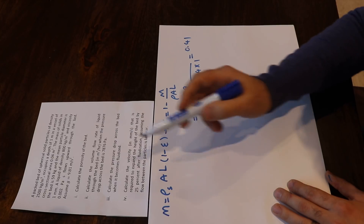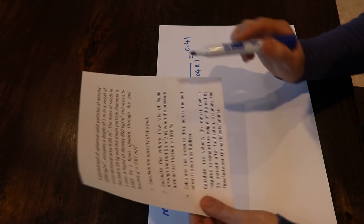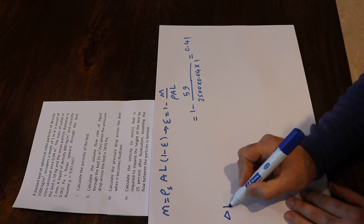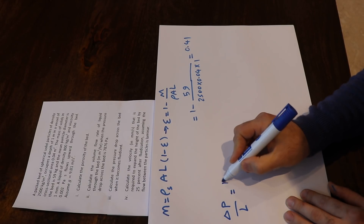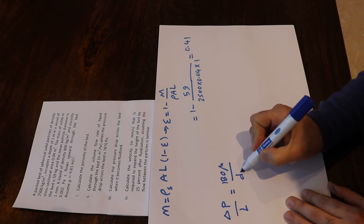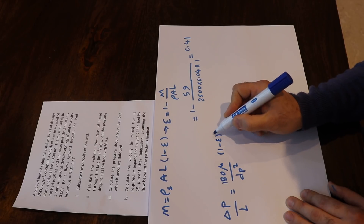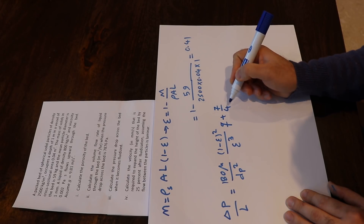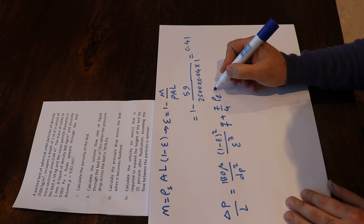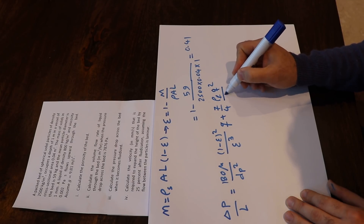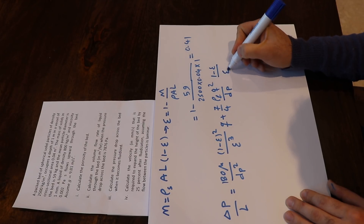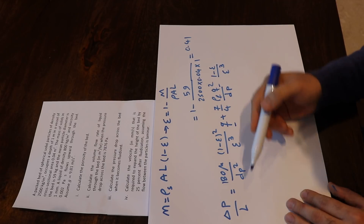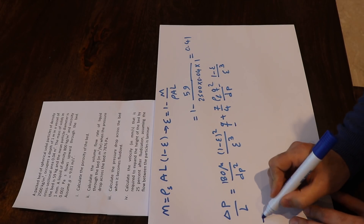The second part is to calculate the volume flow rate of liquid through the bed when the pressure drop is 7876 Pascal. For that, we write Ergun's equation: ΔP/L = 180μ/dp² × (1−ε)²/ε³ × Q + (7/4) × ρ_F × Q² / dp × (1−ε)/ε³. All parameters are known except Q, so we plug in the values: 7876/1 = 180 × 0.002 / (0.001² × 0.41² / 0.41³) × Q + (7/4) × 800 / 0.001 × 0.41/0.41³ × Q².